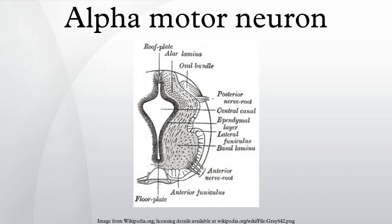Alpha motor neurons innervating the head and neck are found in the brainstem. The remaining alpha motor neurons innervate the rest of the body and are found in the spinal cord. There are more alpha motor neurons in the spinal cord than in the brainstem, as the number of alpha motor neurons is directly proportional to the amount of fine motor control in that muscle.